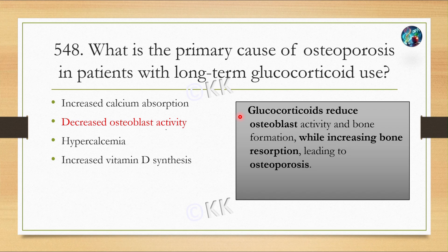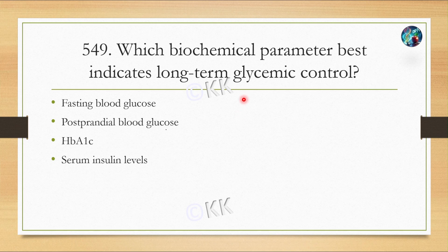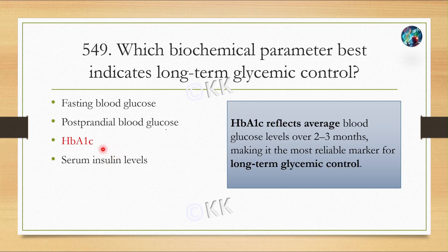Next question: which biochemical parameter best indicates long-term glycemic control? Option A: fasting blood glucose. Option B: postprandial blood glucose. Option C: HbA1c. Option D: serum insulin levels. The correct answer is Option C — HbA1c level. Glycosylated hemoglobin reflects average blood glucose over time and is now considered the most reliable marker for long-term glycemic control.